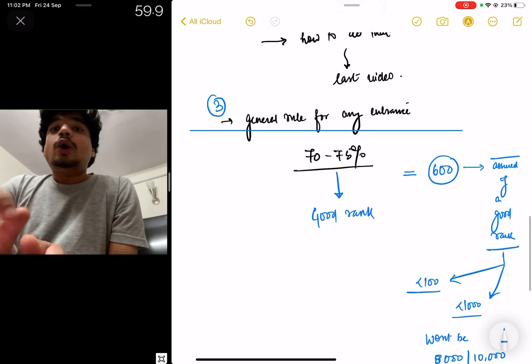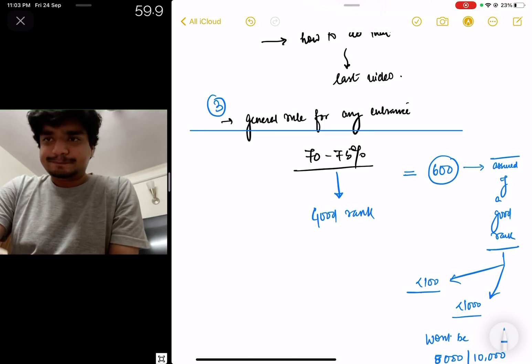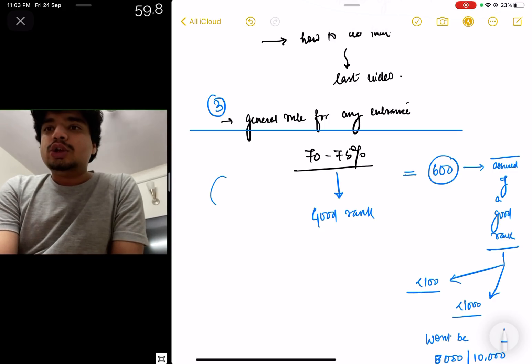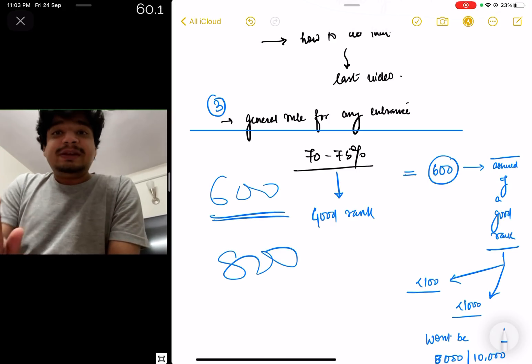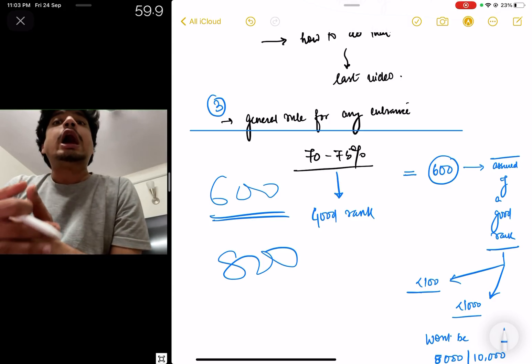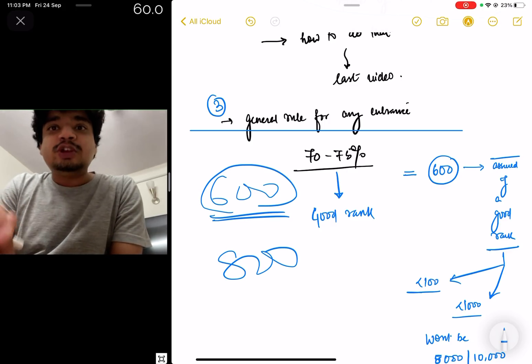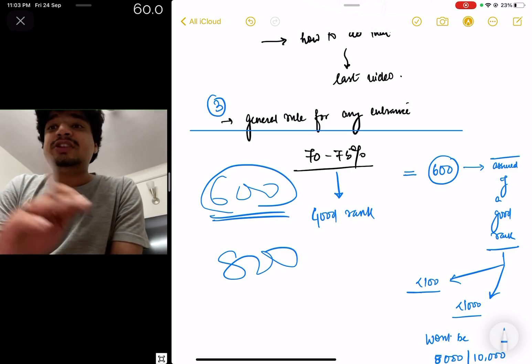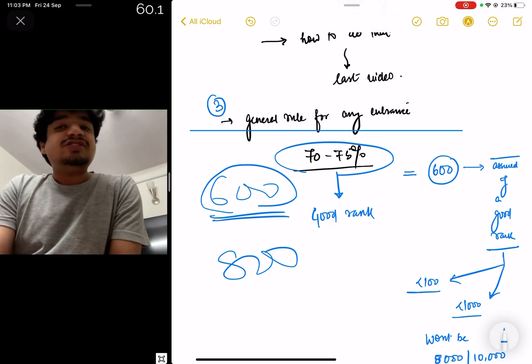Last but definitely not the least, although we cannot predict the rank, this is a very general rule for any entrance examination: usually 70 to 75 percent people score. So 600 ke aas paas, in this 800 marks paper you can be rest assured it's a good score. It's not like a paper is going to be very high scoring. No matter how high scoring the paper is, 70-75 percent in any competitive MCQ-based negative marking exam lana mushkil hota hai. This is valid from our undergraduate, remains valid for postgraduate, and for DM entrances as well.